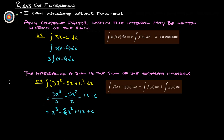Another very handy rule would be that the integral of a sum is the sum of the separate integrals. Really what it's saying is if you've got the integral of two functions that are added together with respect to x, you can turn that into the integral of one of the functions with respect to x plus the integral of the other function with respect to x, and add those two things together.